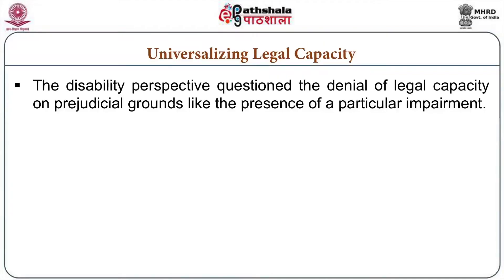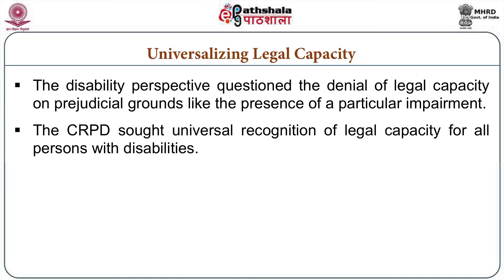From the disability perspective, the denial of legal capacity on prejudicial grounds — like the presence of a particular impairment — has been challenged in law. The CRPD sought universal recognition of legal capacity for all persons with disabilities. Rather than the prior condition of assuming people with disabilities have no legal capacity unless they can prove they do, this has been inverted: everyone is assumed to have legal capacity unless they prove that they do not.